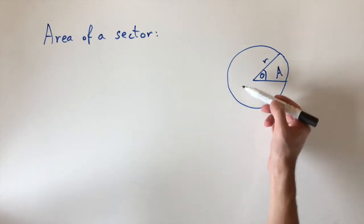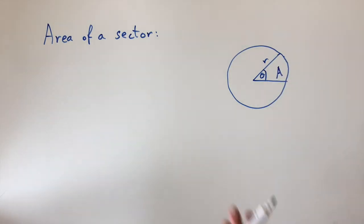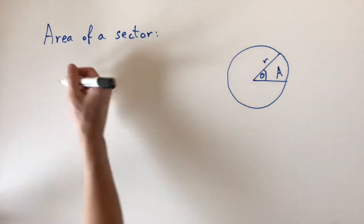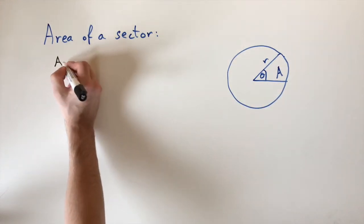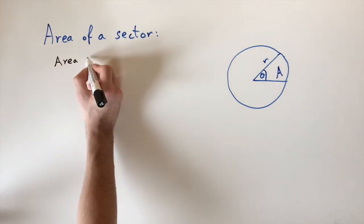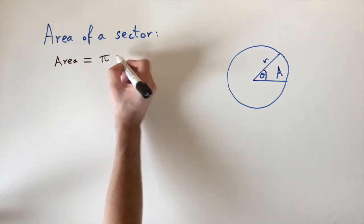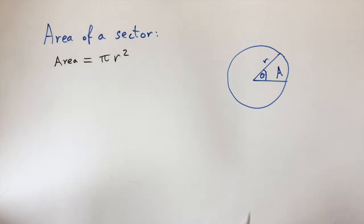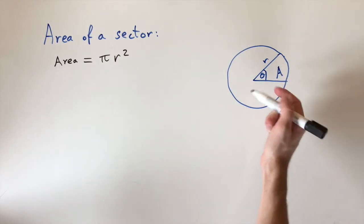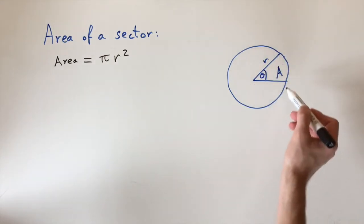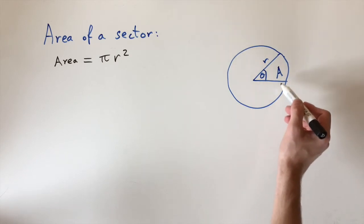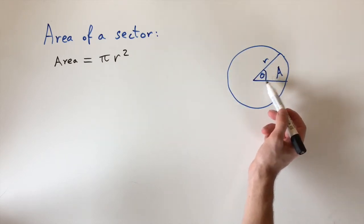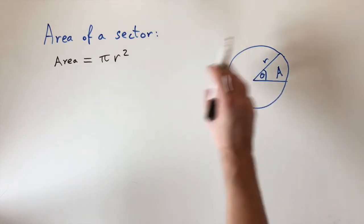We need a formula in terms of the angle theta and the radius r. The formula for the whole area of a circle is pi times r squared. We can find the area of a sector by thinking about the ratio it takes up of the whole circle, given by the ratio of the angle to a full revolution.